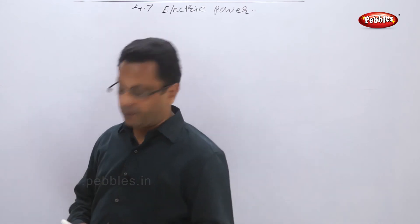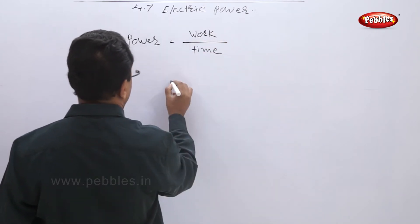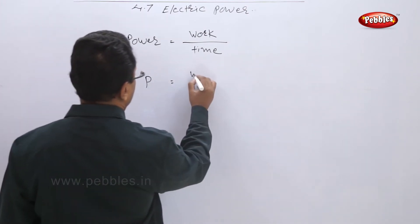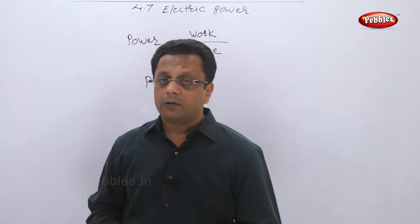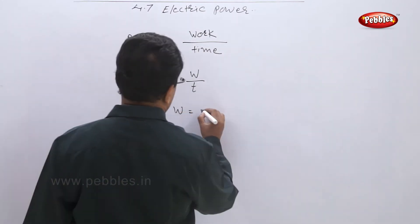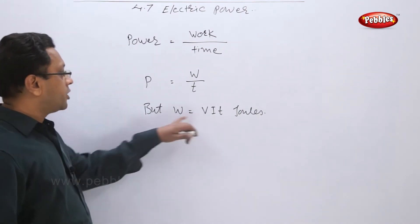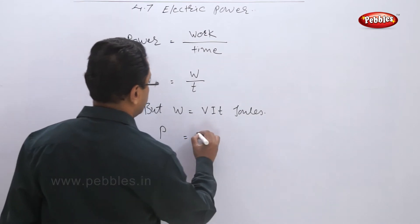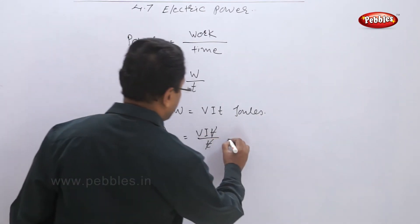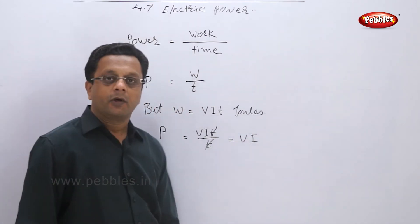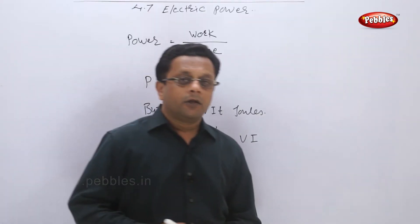Now let us see the formula for calculating electrical power. Power P is equal to work W upon time T. We know that W equals V into I into T joules. Substituting this W into the formula, P equals V·I·T divided by T. The T cancels, and we get power P equals V into I — that is, voltage multiplied by current flowing through the conductor.